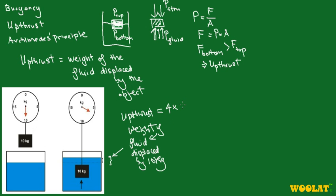Not forgetting to multiply by 9.81, because this is after all weight — mass multiplied by acceleration due to gravity. So the difference in the reading tells me that the upthrust is associated with a 4kg mass, and subsequently I need to multiply by acceleration due to gravity of 9.81.